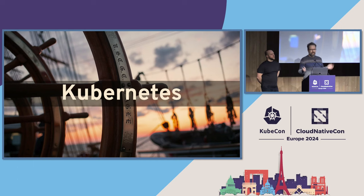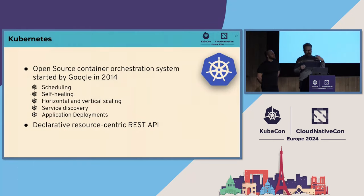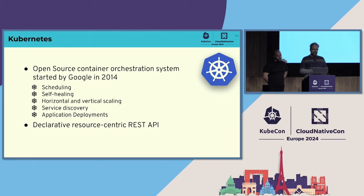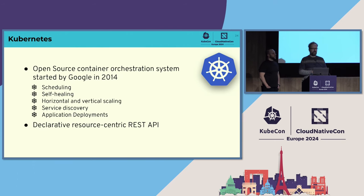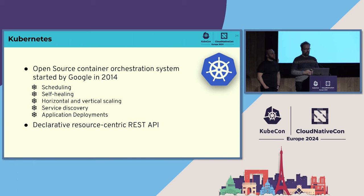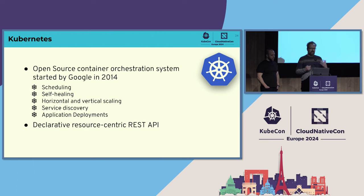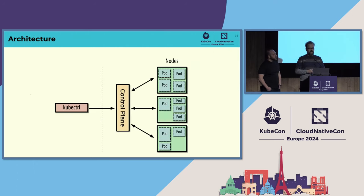A quick introduction to Kubernetes. Kubernetes was started in 2014 and created by Google, who open-sourced the internal way they orchestrate containers using their internal system called Borg. Kubernetes provides everything you need for container orchestration: scheduling, self-healing, automatic horizontal scaling by duplicating applications, and vertical scaling by increasing memory or CPU. The most important thing to know is that Kubernetes has a declarative, resource-centric API — you declare your target state and Kubernetes works to bring the current state closer to it.